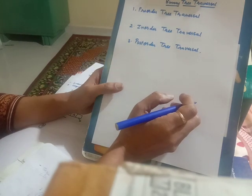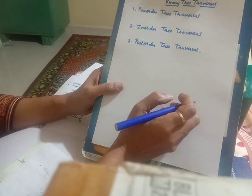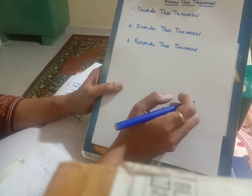You must have heard about pre-order, in-order, and post-order with respect to prefix, infix, and postfix types of expression. In prefix expression, the operator appears before the two operands. In infix, the operator appears in between the operands. In postfix, the operator appears after the operands. Similarly, we have three types of traversal depending upon when the parent node is processed compared to its left and right child.